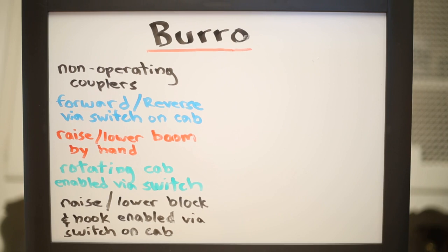You can raise and lower the boom by hand only. It has a rotating cab that will automatically reverse directions by way of a switch on the side of the car, and you can lower and raise the block and hook via switch on the car.